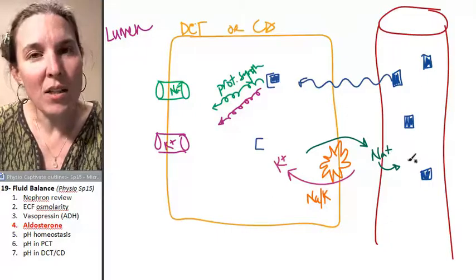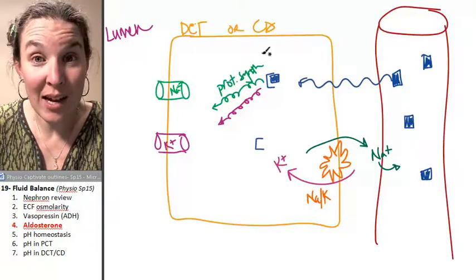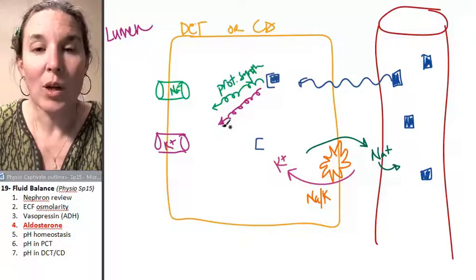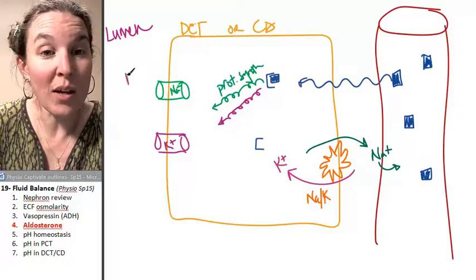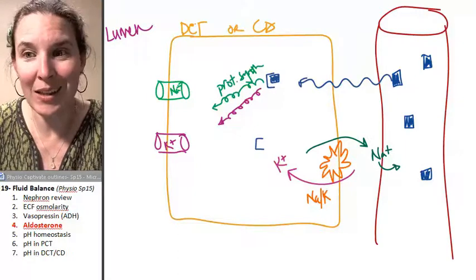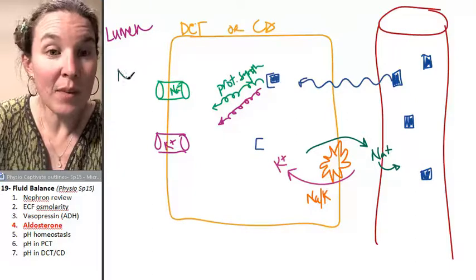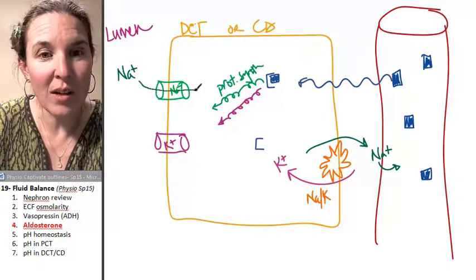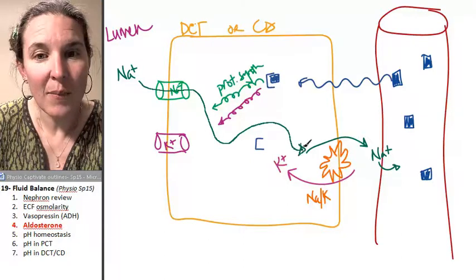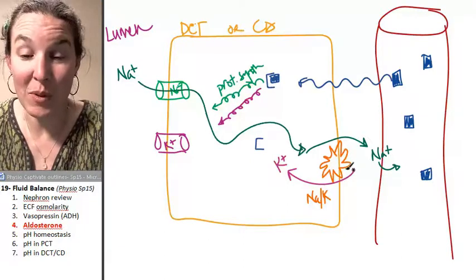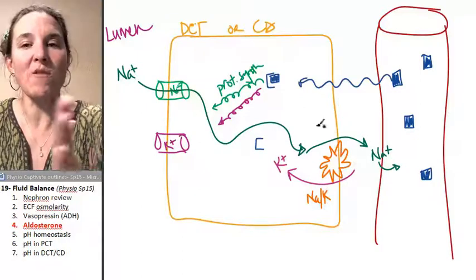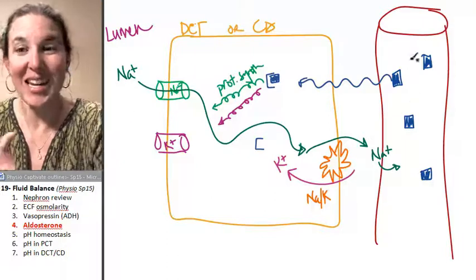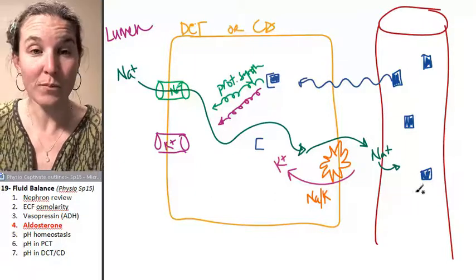If we're pumping sodium out, what did we just create inside this collecting duct principle cell? We created a sodium gradient. And so sodium in the filtrate is going to come in. And because we activated more sodium potassium pumps, we are going to functionally reabsorb sodium from the filtrate into the bloodstream.